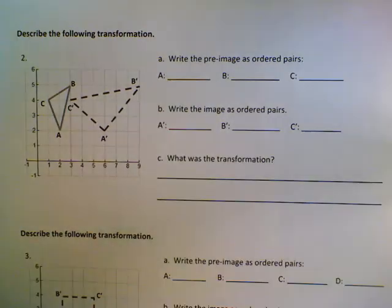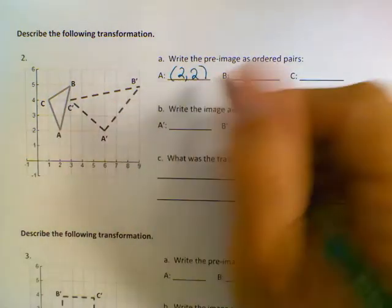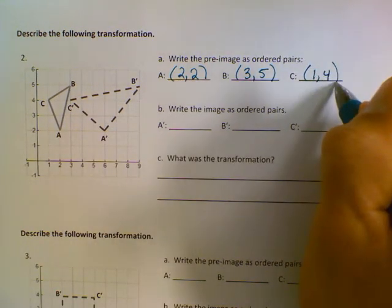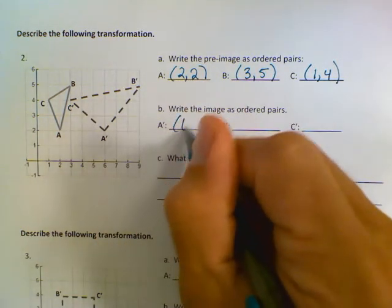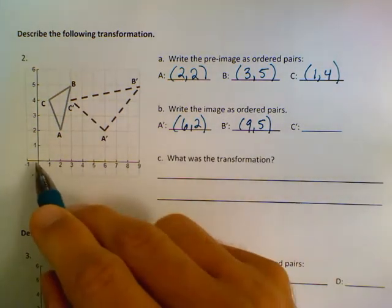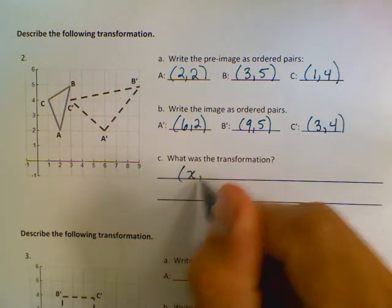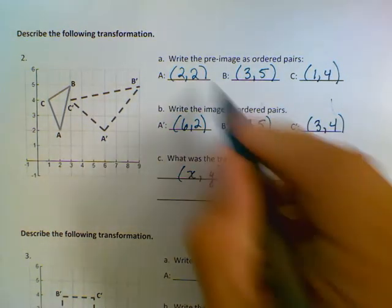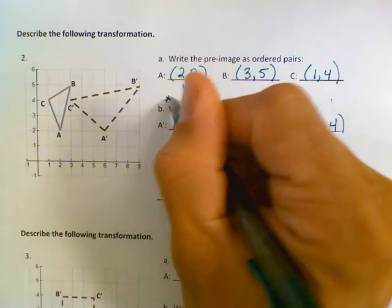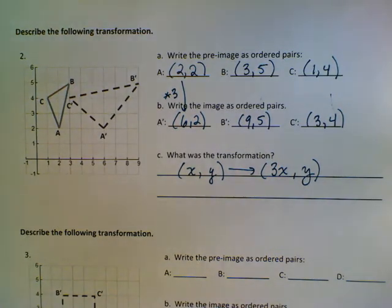So the next page says to write the pre-image as ordered pairs: A(2, 2), B(3, 5), C(1, 4), then A'(6, 2), B'(9, 5), C'(3, 4). So again, it looks like our y values stayed the same, but our x values changed. It looks like they multiplied by 3 again. So this is just a transformation of (3x, y).